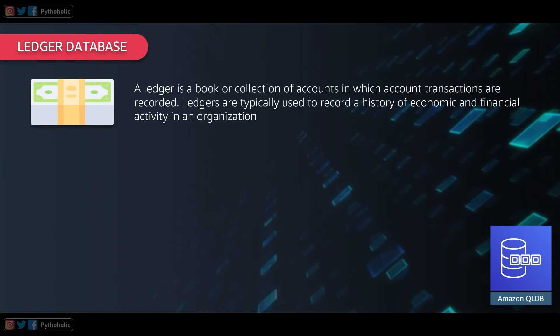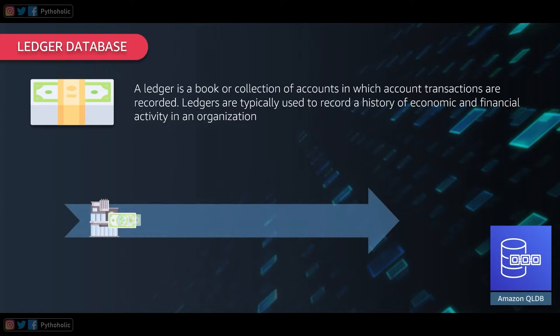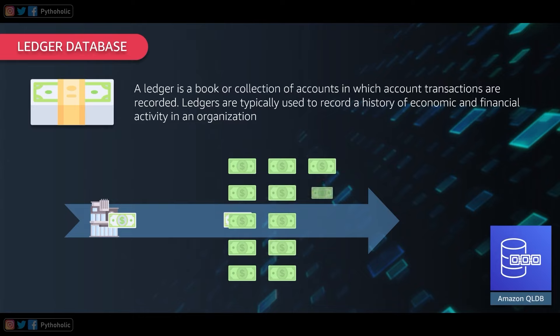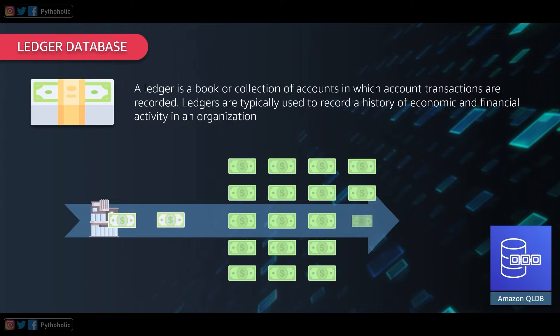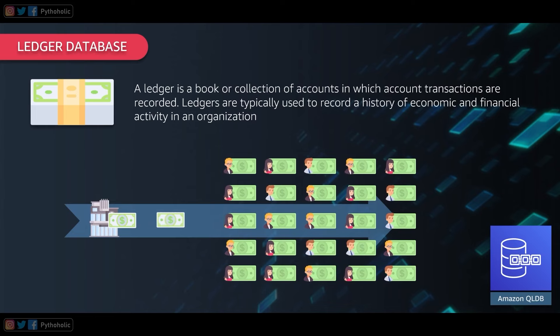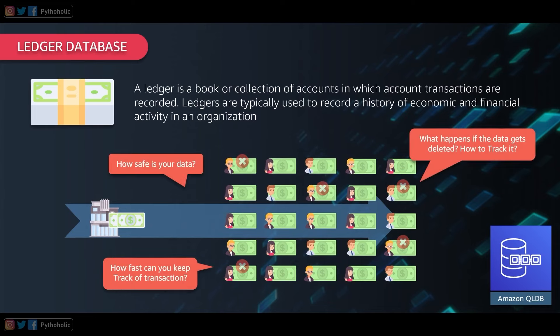Leaving the 'quantum' part for now, let's talk about the ledger. A ledger is a book or collection of accounts in which account transactions are recorded. Ledgers are typically used to record a history of economic and financial activities in an organization. Think of a ledger as a record. In a banking scenario, there are millions of transactions taking place in a very short time, raising concerns like how safe your transactions are.